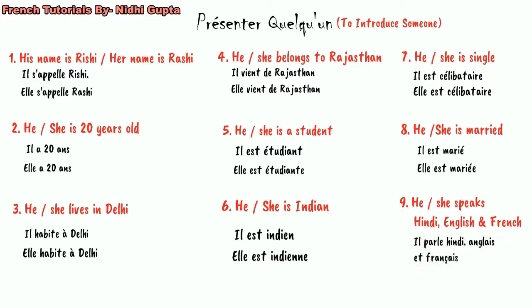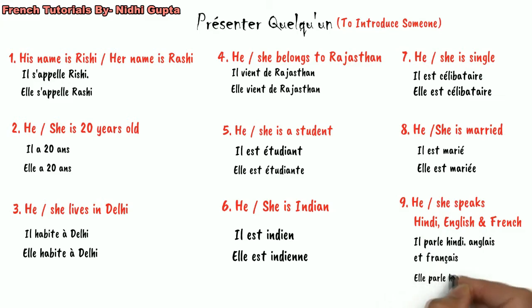Similarly, if Rashi speaks multiple languages, we say 'elle parle anglais, Hindi et français.' You can add as many languages as needed. This is how we present somebody else when introducing them to someone.